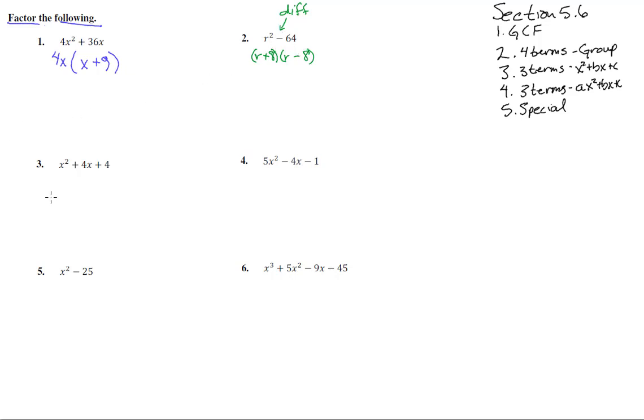Number three—no greatest common factor, three terms, so it's method number three. Here's x and x, and what multiplies to 4? One and four, or two and two. What adds to 4? Two and two. That's plus 2, plus 2. You may also recognize this as (x + 2)². That right there is a perfect trinomial square.